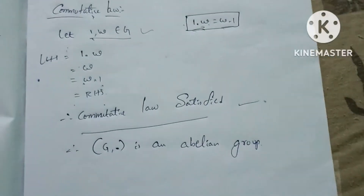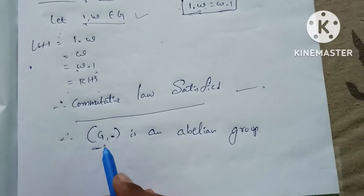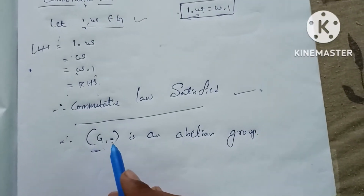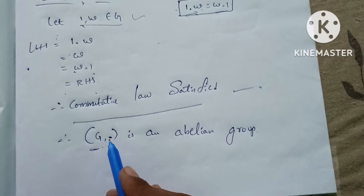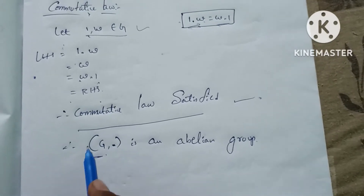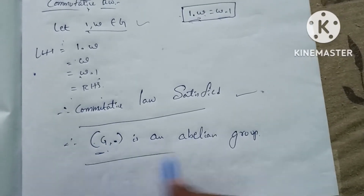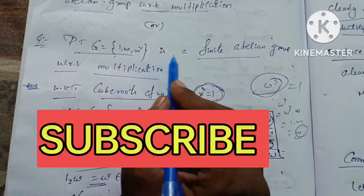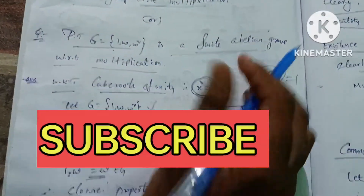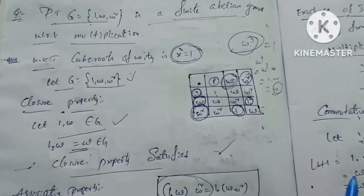All five laws are satisfied. G under the binary operation dot is an abelian group. Since G has a finite number of elements, it is a finite abelian group. This completes the solution.